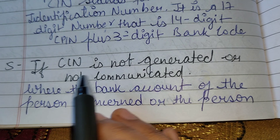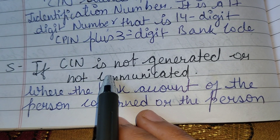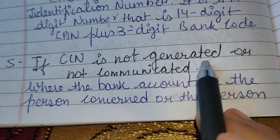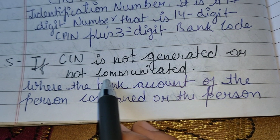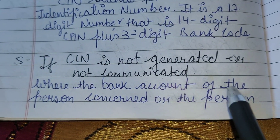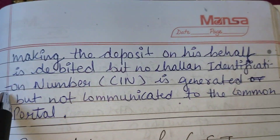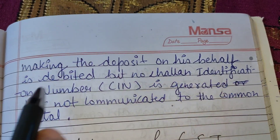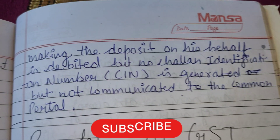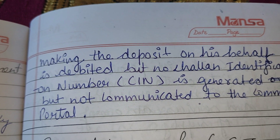The fifth step covers the situation where CIN is not generated or not communicated. If the bank account of the person making the deposit has been debited but the Chalan Identification Number has not been generated or communicated to the common portal, the matter needs to be taken up with the bank. These were the five steps of the GST payment procedure.